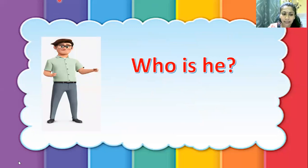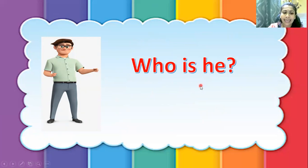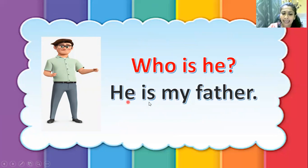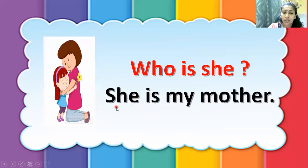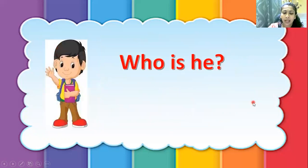For example, you want to know who is in this picture. Who is he? The answer: He is my father. Next, you want to know who is in this picture, and she is a girl or a lady. So you use the words 'Who is she?' And the answer is: She is my mother.